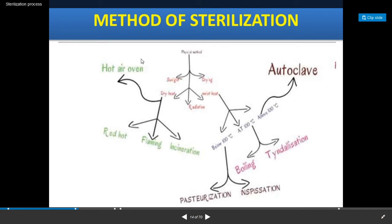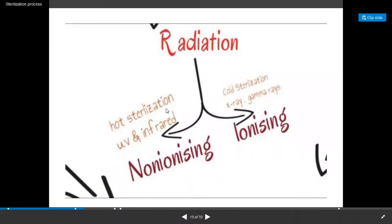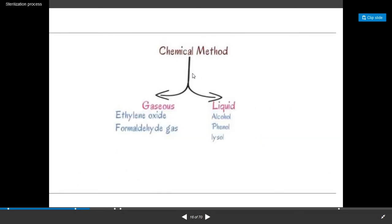This is the graphical representation of the methods of sterilization. Under dry heat: hot air oven, and red hot, flaming, and incineration. Under moist heat: autoclaving above 100 degrees Celsius; at 100 degrees Celsius, boiling and tyndallization; and below 100 degrees Celsius, pasteurization. Under radiations, there is hot sterilization using ultraviolet and infrared, which are non-ionizing radiations, and cold sterilization including X-rays and gamma rays, which are ionizing radiations. Chemical methods include gaseous methods such as ethylene oxide, formaldehyde gas, and beta-propiolactone, and liquid methods such as alcohol, phenol, and Lysol.